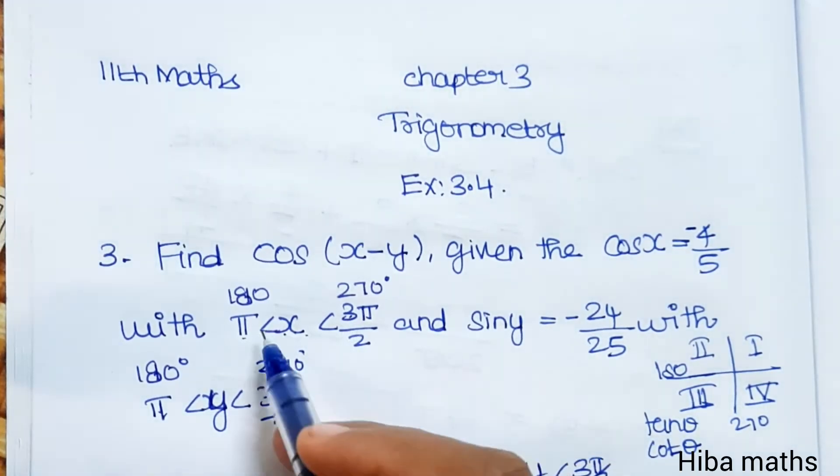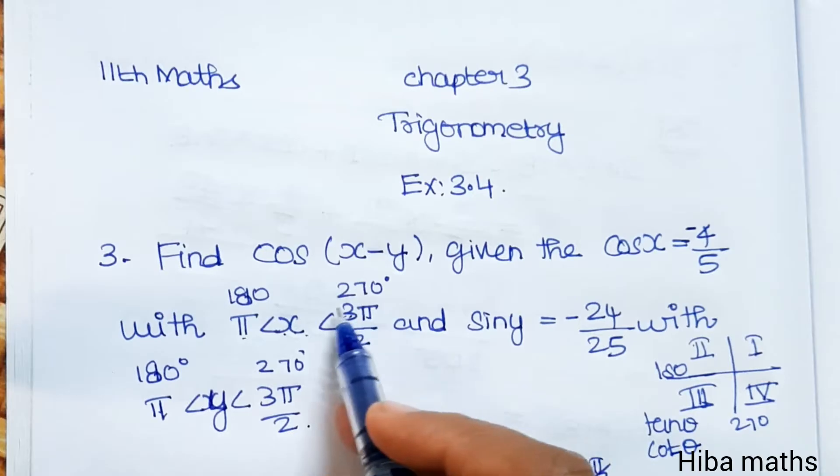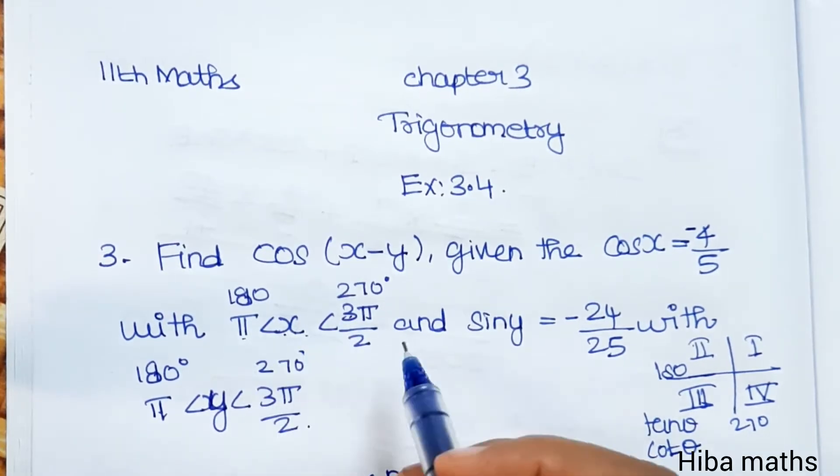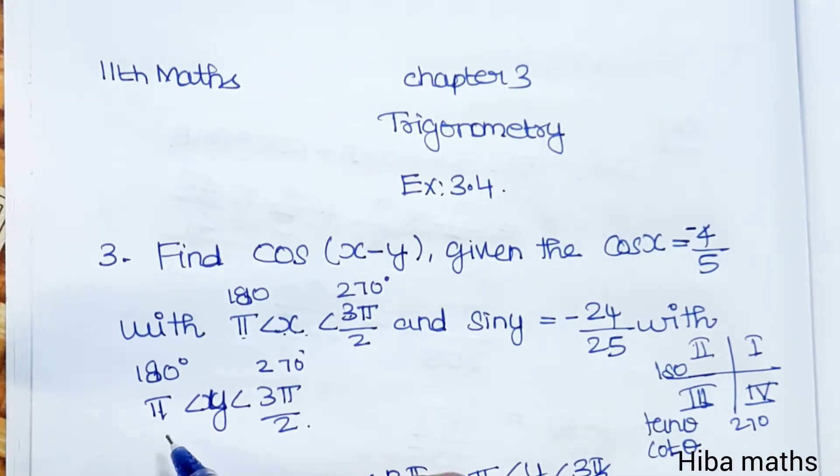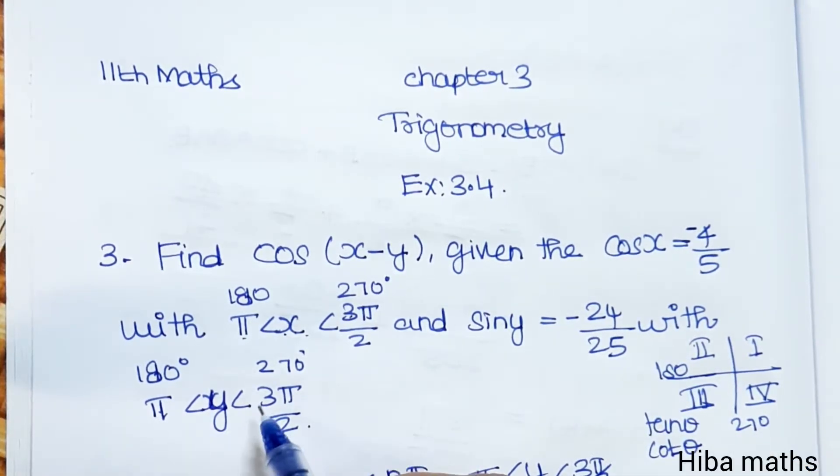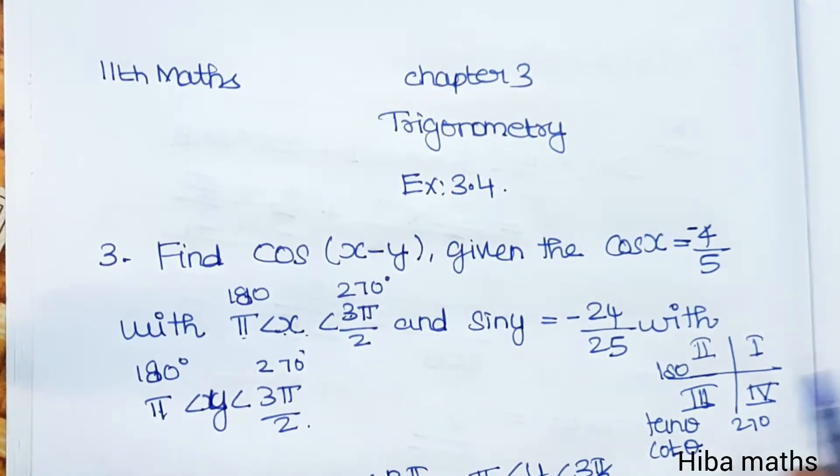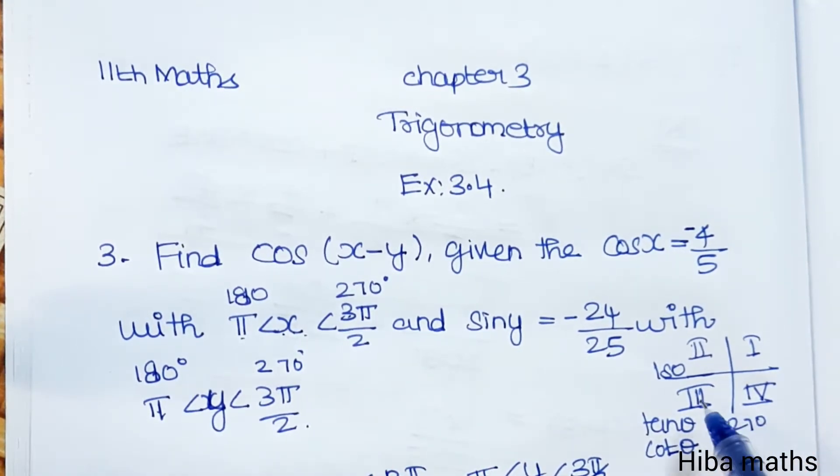π is 180, 3π by 2 is 270, so x's value is in the third quadrant. And sin y equals minus 24 by 25 with y is greater than π and less than 3π by 2. This is 180 to 270, so y is also in the third quadrant.